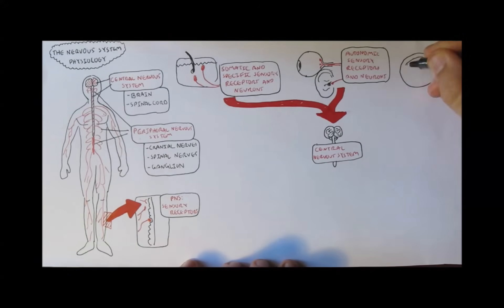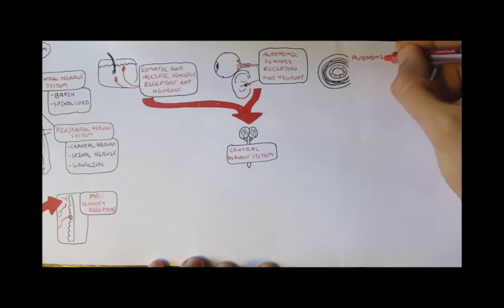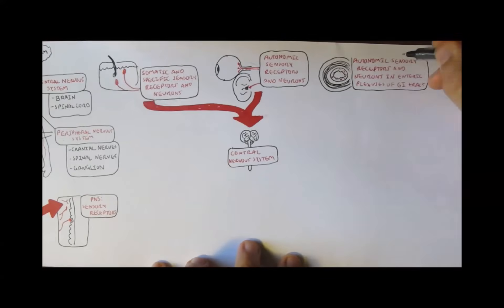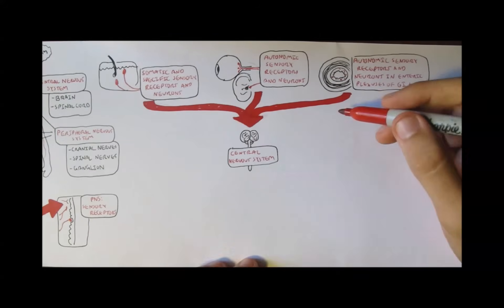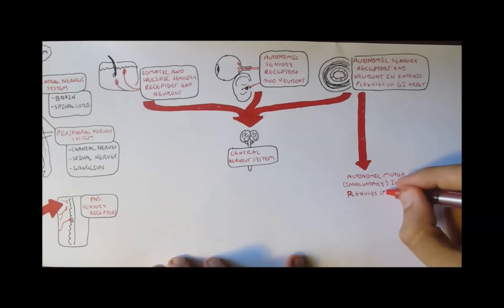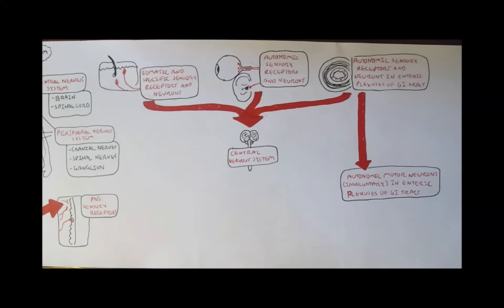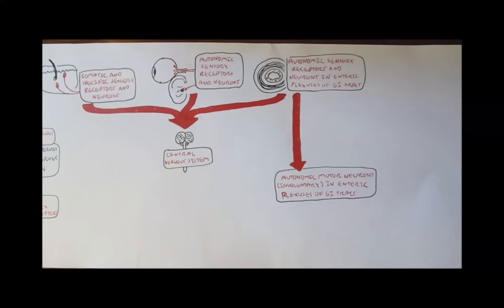There are also different types of autonomic sensory receptors which are inside your body such as the enteric plexus of the GI tract and these receptors can also send signals to the CNS for processing. These internal organ-bound sensory receptors can actually also involuntarily activate the autonomic motor neuron itself without the assistance of CNS.